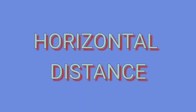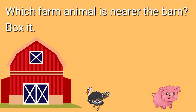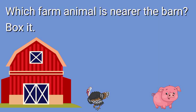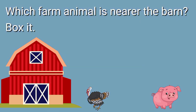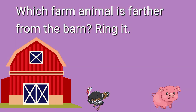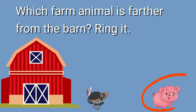Now, let's answer some drills about horizontal distance. Which farm animal is nearer the barn? Box it! Yes, the turkey! Which farm animal is farther from the barn? Ring it! Right!